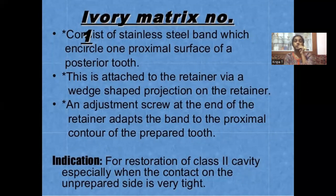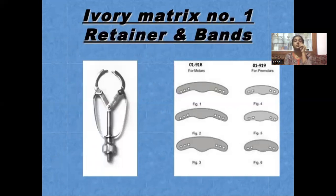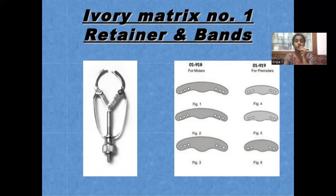The ivory matrix number one retainer is used with a stainless steel band. It encircles only one proximal surface of a posterior tooth. The band is attached to the retainer with a u-shaped projection and there is a screw to adjust at the end of the retainer, which helps adapt the band to the proximal contour of the prepared tooth. This can be used to restore class 2 cavities, especially when the contact on the unprepared aspect is very tight. Nowadays students rarely see this, as with the advent of the universal matrix system, these are no longer commonly used.